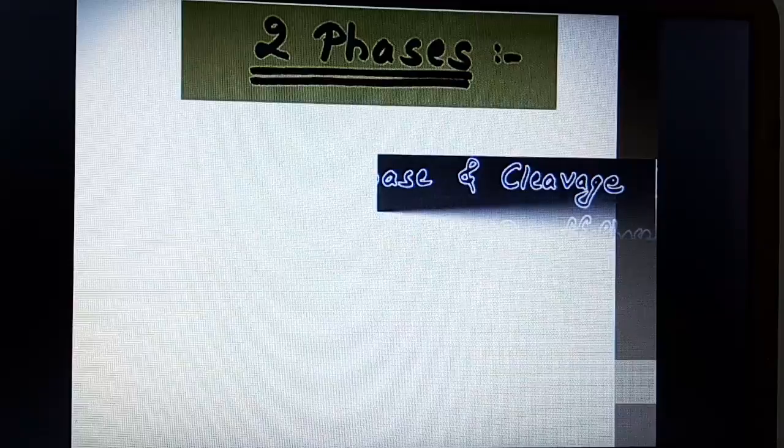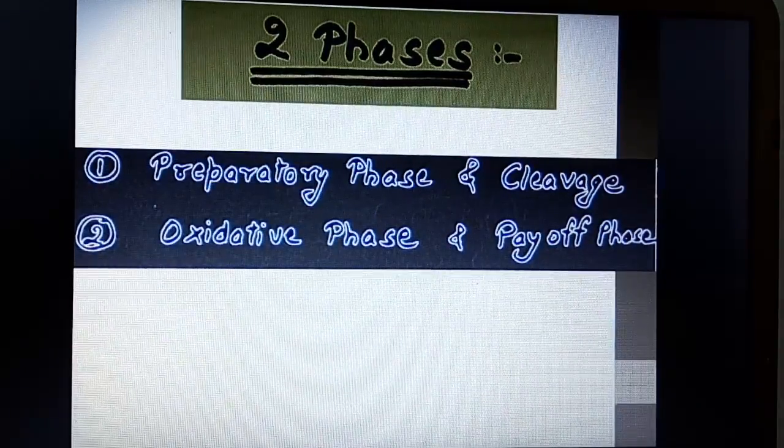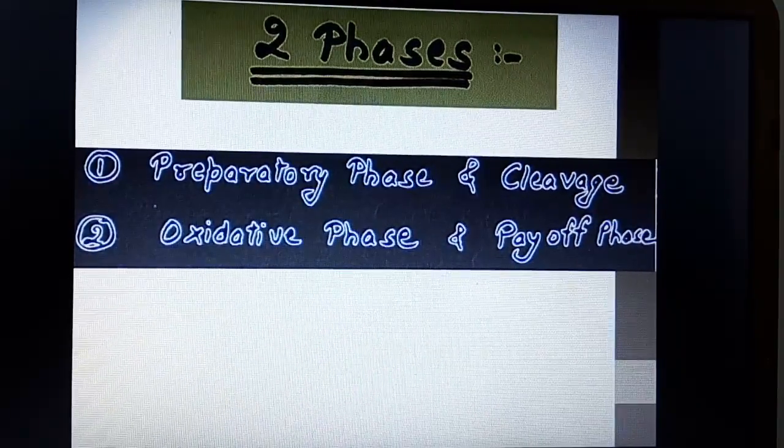There are two phases of glycolysis. One is called the preparatory phase and cleavage. Second is oxidative phase or payoff phase. What exactly happens in glycolysis? Let's take a look.